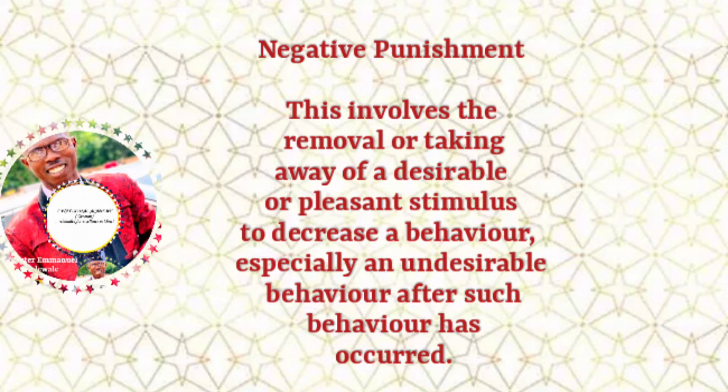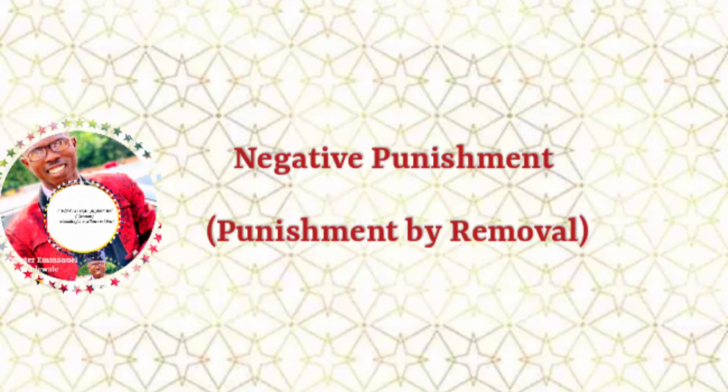Here's an example of negative punishment: when your child misbehaves, you can take away the child's favorite toys. You took away the child's favorite toys, meaning you are taking away a pleasant stimulus from that child in order to decrease that child's misbehavior.